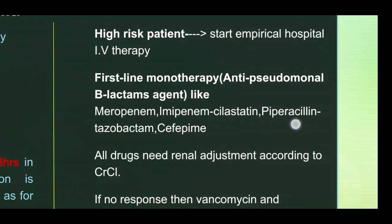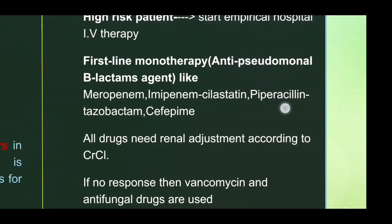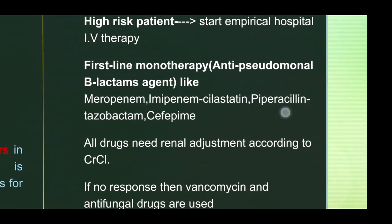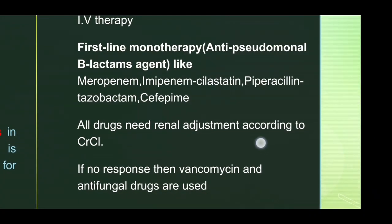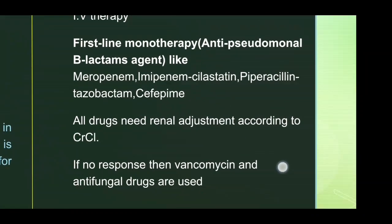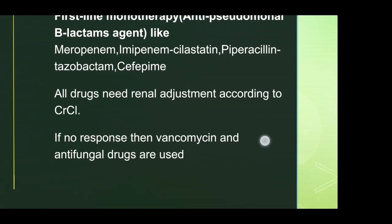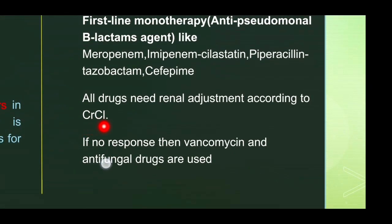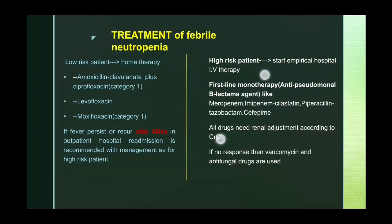High-risk patients require empirical IV antibiotic therapy. First-line monotherapy is with anti-pseudomonal beta-lactam agents like meropenem, imipenem, piperacillin-tazobactam, or cefepime. All drugs need renal adjustment according to creatinine clearance. If there is no response, vancomycin is added for two to three days; if still no response, antifungal drugs like amphotericin are started.